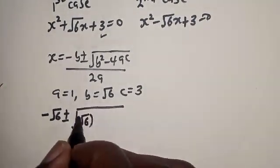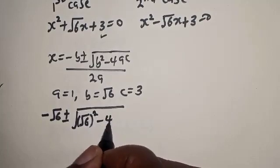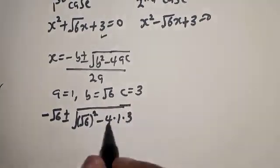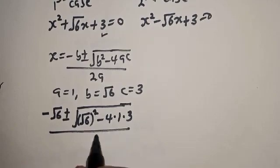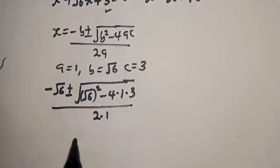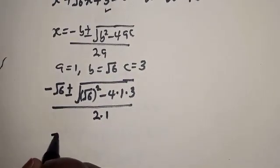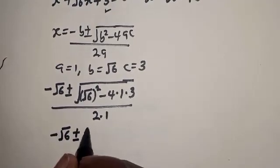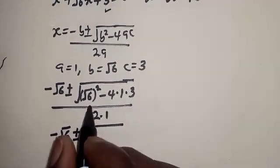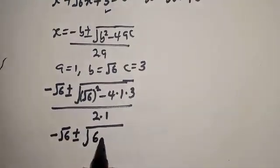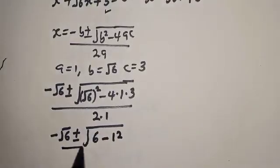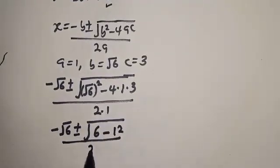Substituting into the formula: x equals minus root 6 plus or minus square root of root 6 squared minus 4 times 1 times 3, over 2 times 1. Root 6 squared is 6, and minus 4 times 1 times 3 is minus 12, over 2.